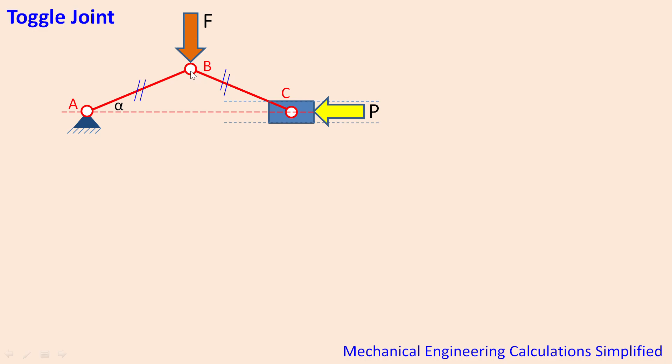And this vertical force actually creates horizontal reaction on slider C and now that reaction is called P. That means with applied force F, the resistance force P is actually balancing the system and the mechanism is remaining in static condition.